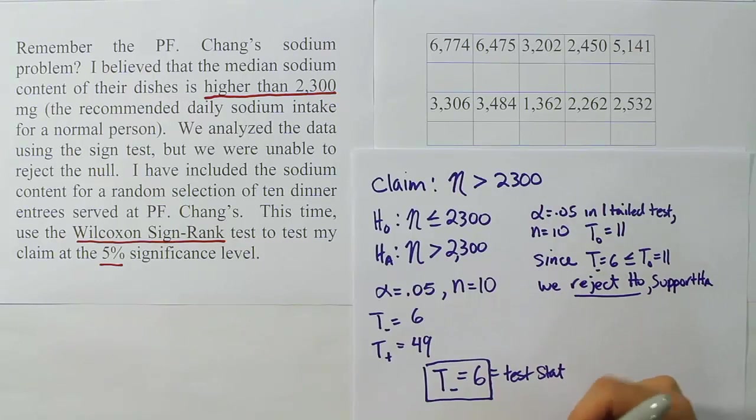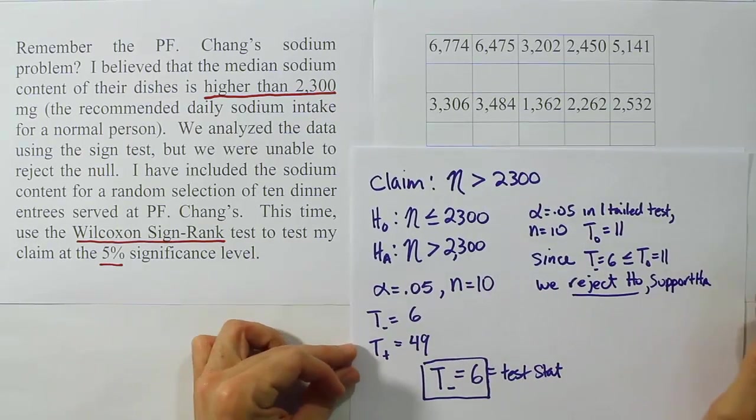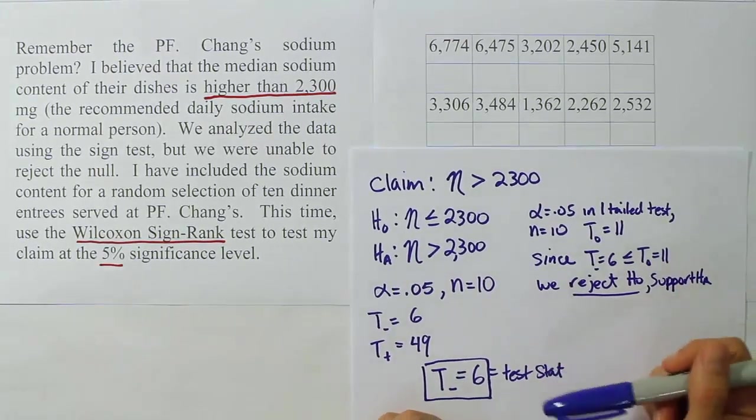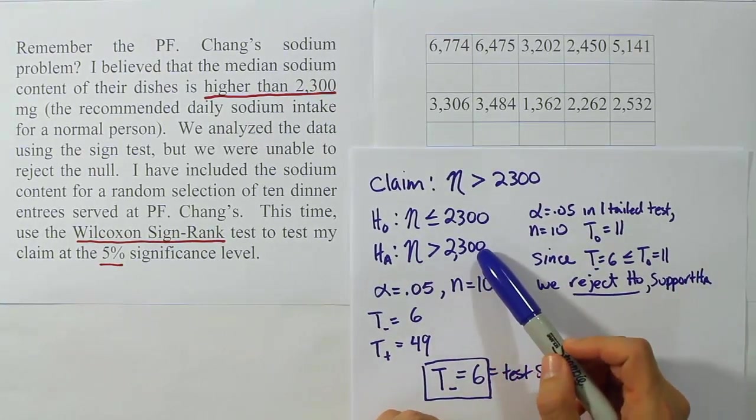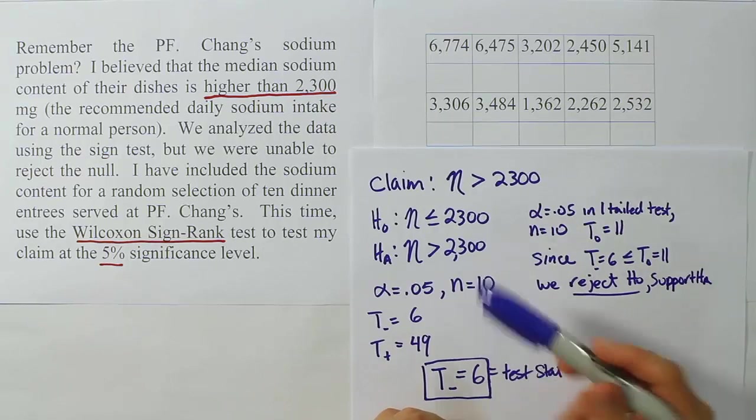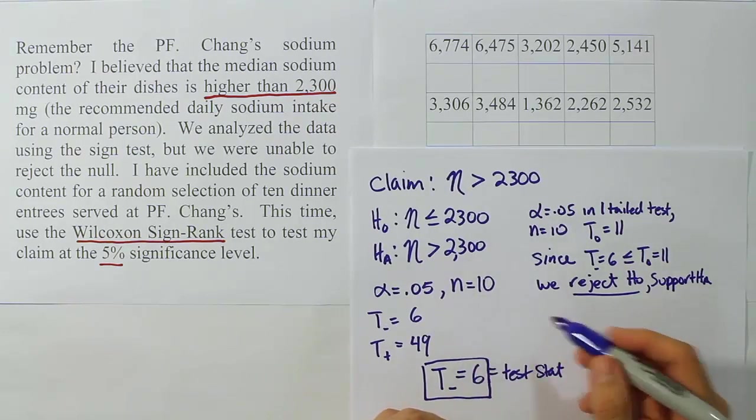And now you can see that we're rejecting this and supporting my claim. So I'm vindicated, finally. My claim was that the PF Chang sodium content was higher than the daily sodium intake that's recommended for an individual for an entire day. I claim that this 2300 was below their median sodium intake. And so I was right here. I finally have shown it with this procedure.